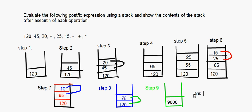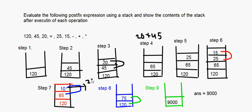So the evaluation gives the answer as 9000. To summarize the steps: Step 4 added 20 + 45 = 65; Step 7 did 25 − 15 = 10; Step 8 did 65 + 10 = 75; and Step 9 did 75 × 120 = 9000. This is how such questions are done by showing stack status at each step.